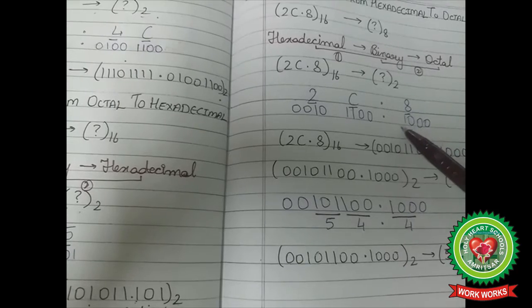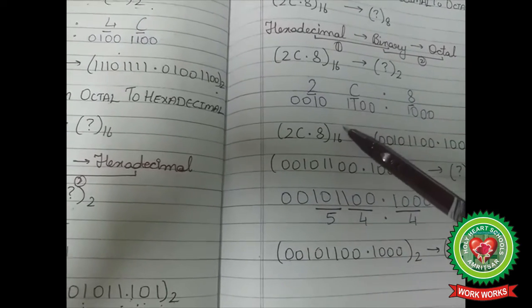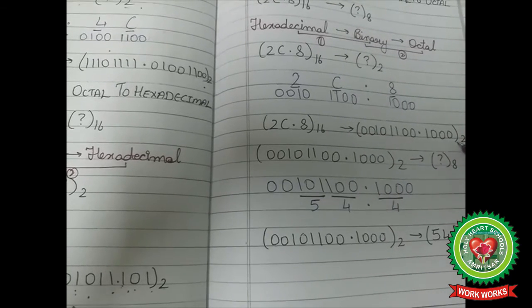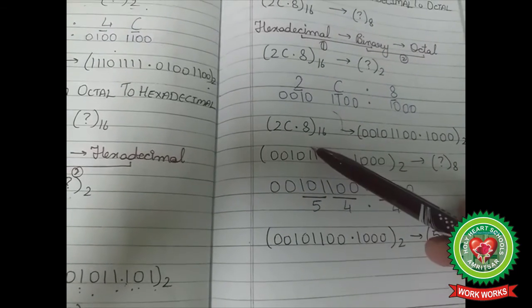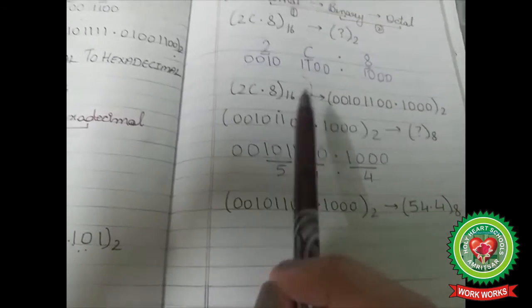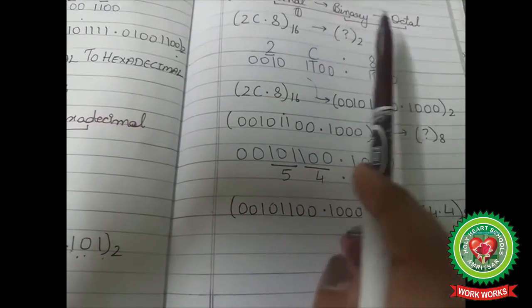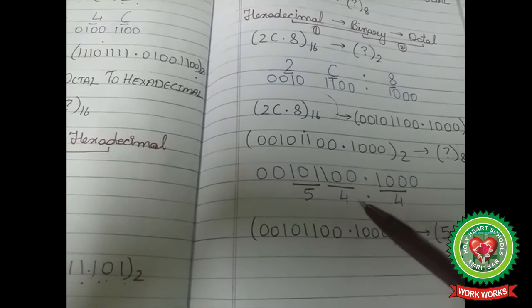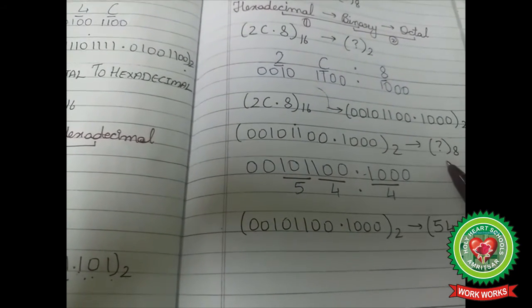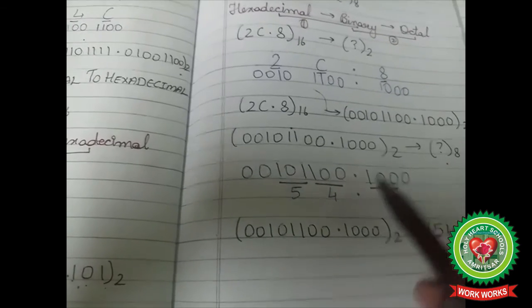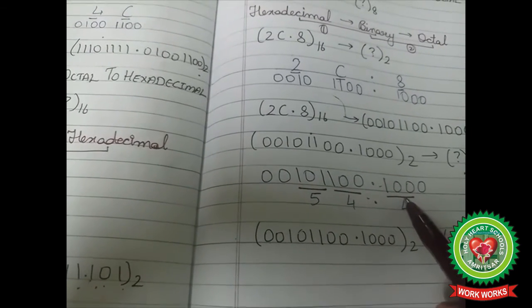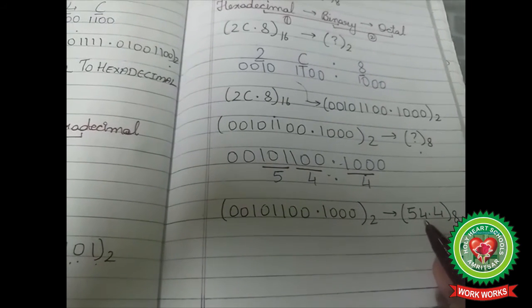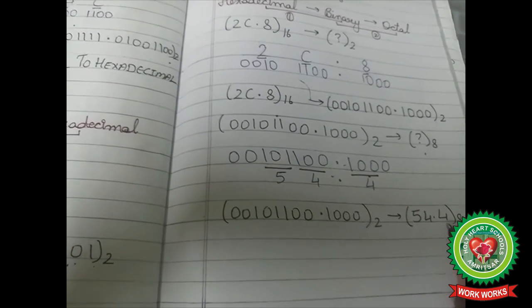Write the binary equivalent of each digit to get the binary equivalent of the hexadecimal number. Then in the second step, convert that binary number into octal by grouping the digits into groups of three. The result is 54.4.